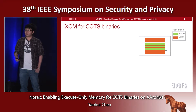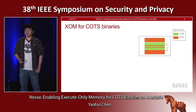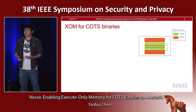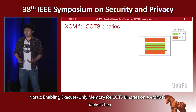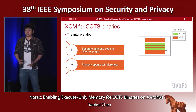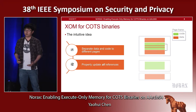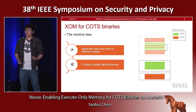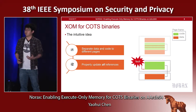It turns out one of the major reasons is that it's non-trivial to enable XOM for code binaries. In this figure, it shows the memory layout of code binaries. You can see that in this memory page there are code and data interleaved together. Because XOM can only be enforced at page granularity, all the data inside this memory page would become non-readable, which will break the program. So the high-level idea is to first separate the code and data into different pages, and then properly update all the references — because if you miss any reference, this will also break the program.